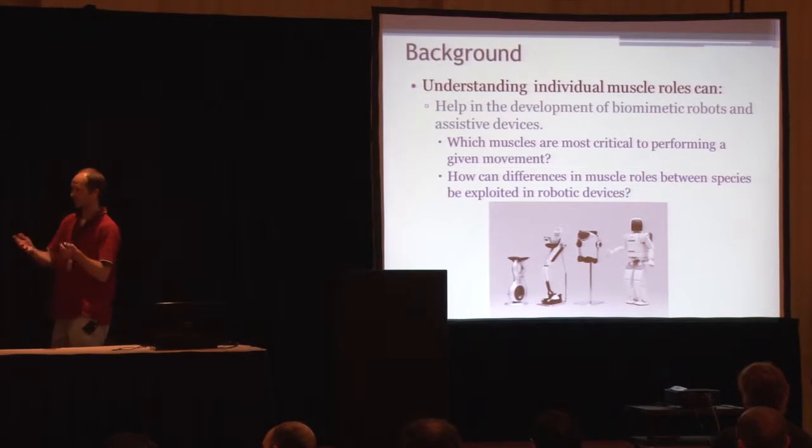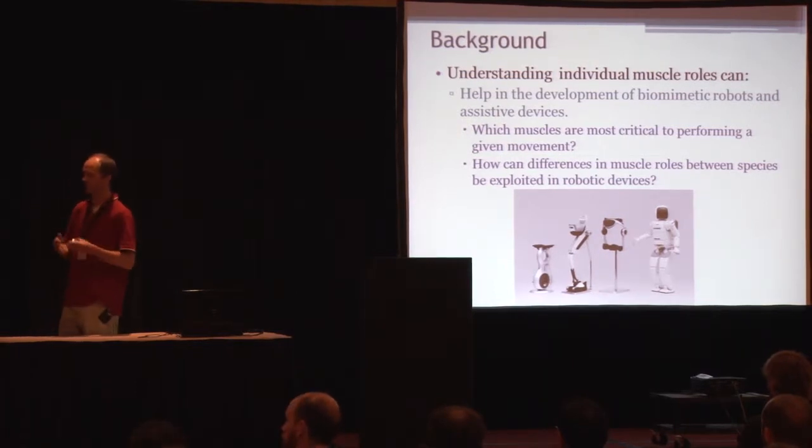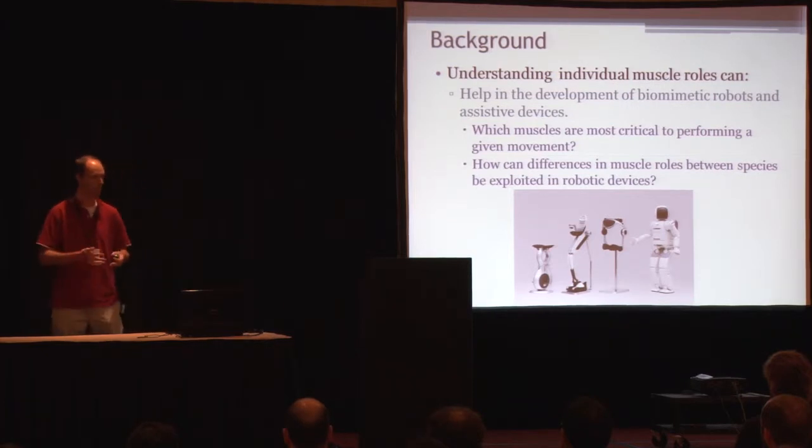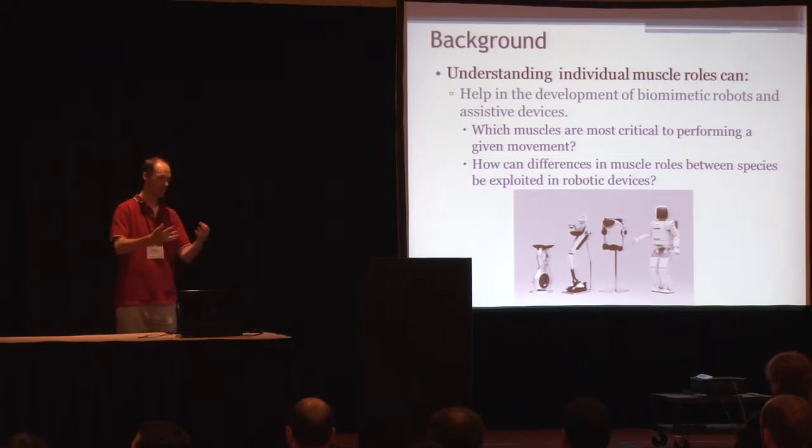What's of most interest here, I think for most of you, is how can we have these muscle roles influence or inspire the development of biomimetic robots or other types of assistive devices. So you can ask questions like, what muscles are most critical to performing a given movement? What muscles are the critical ones for walking in a bird versus in a human? And then how can we translate that to building a robot or exploit that to make robotic devices?